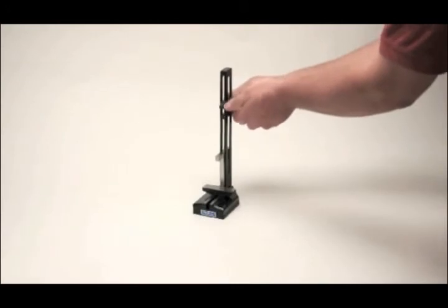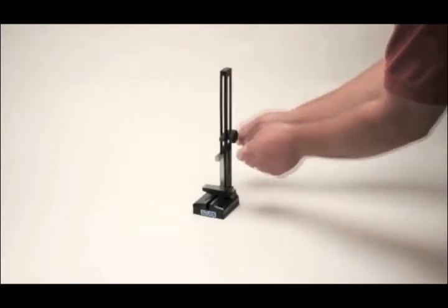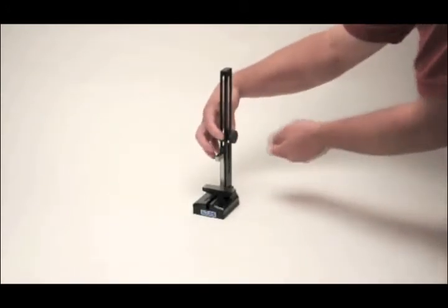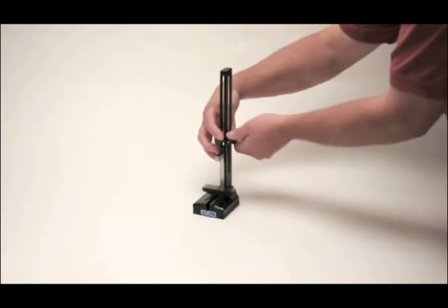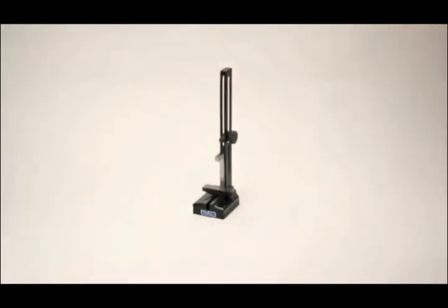Loosen the quick adjust knob and lower the clamp to make contact with the anvil. With fingers on either side of the quick adjust, compress the spring with moderate pressure, turn the knob and lock it into place to complete the setup.